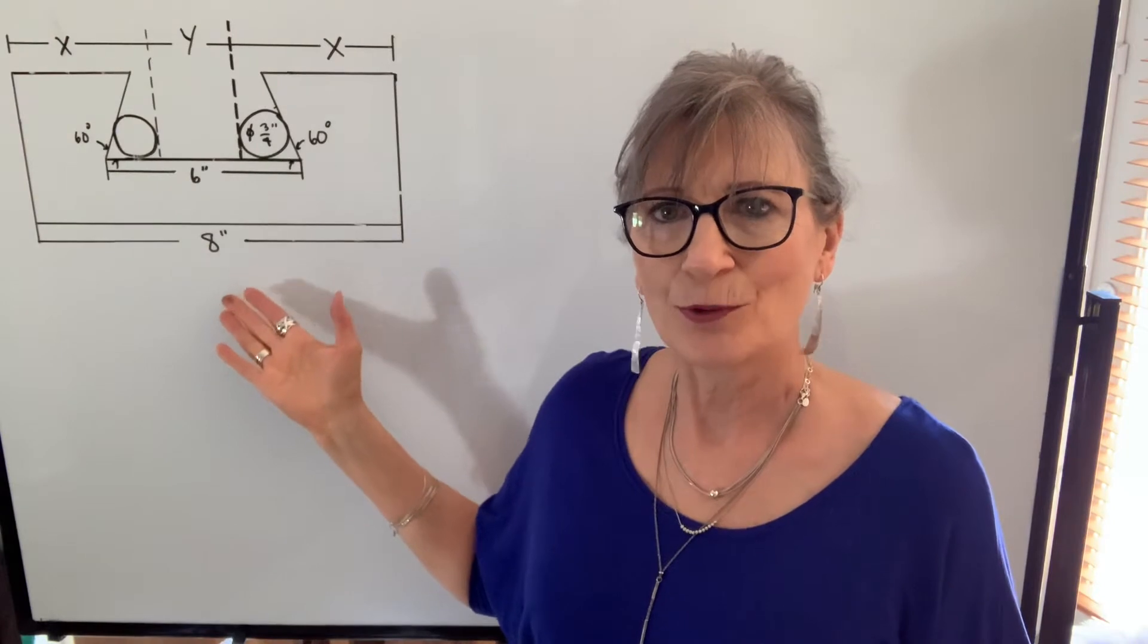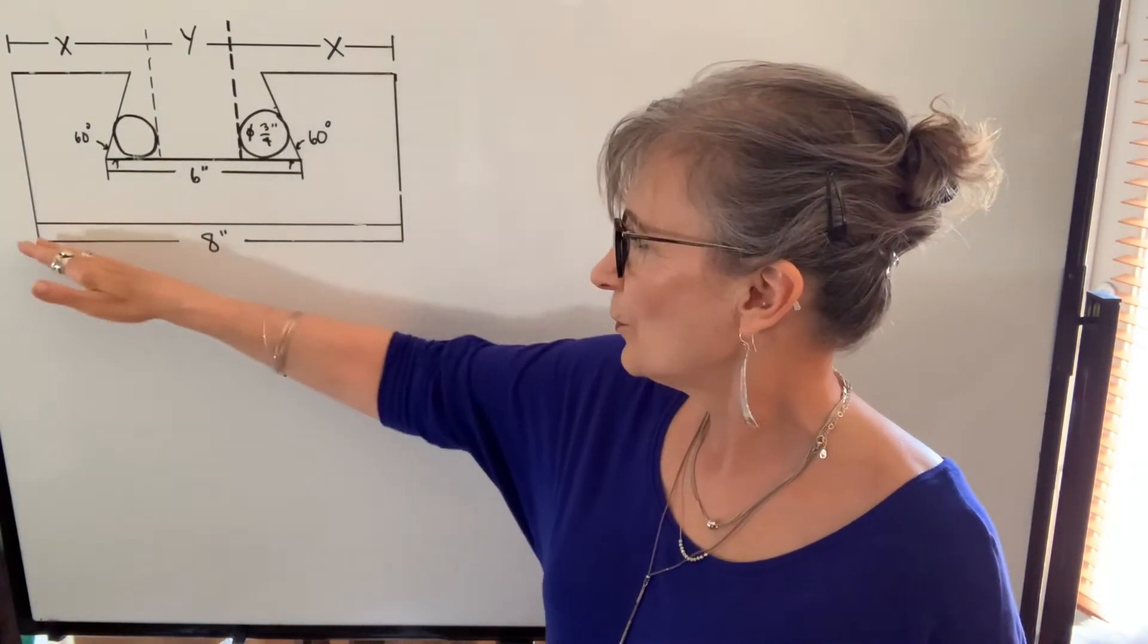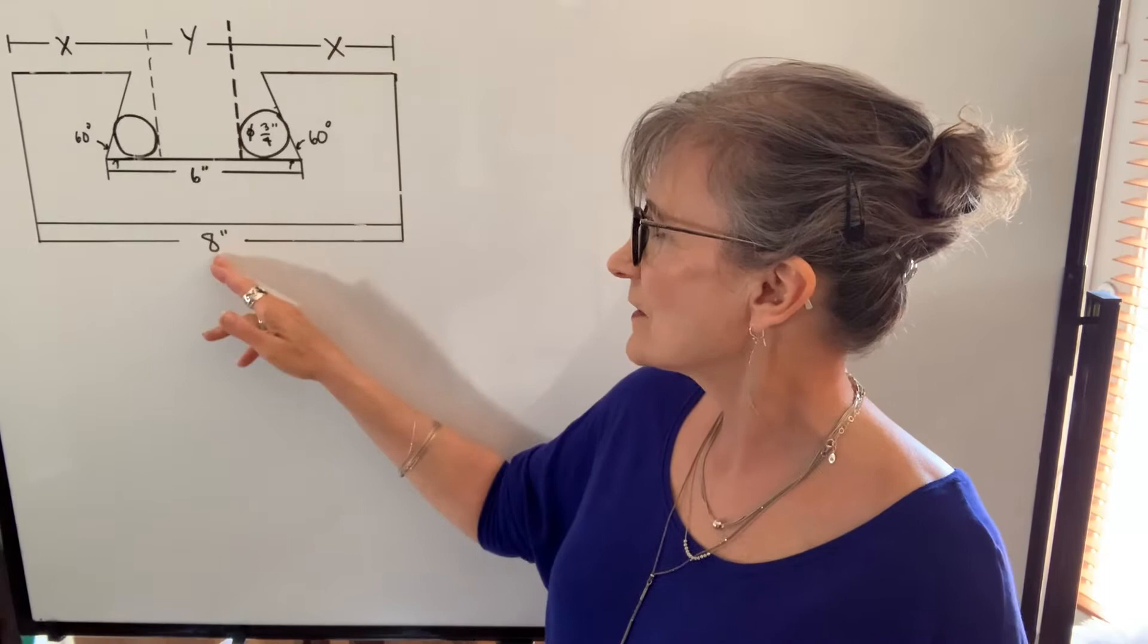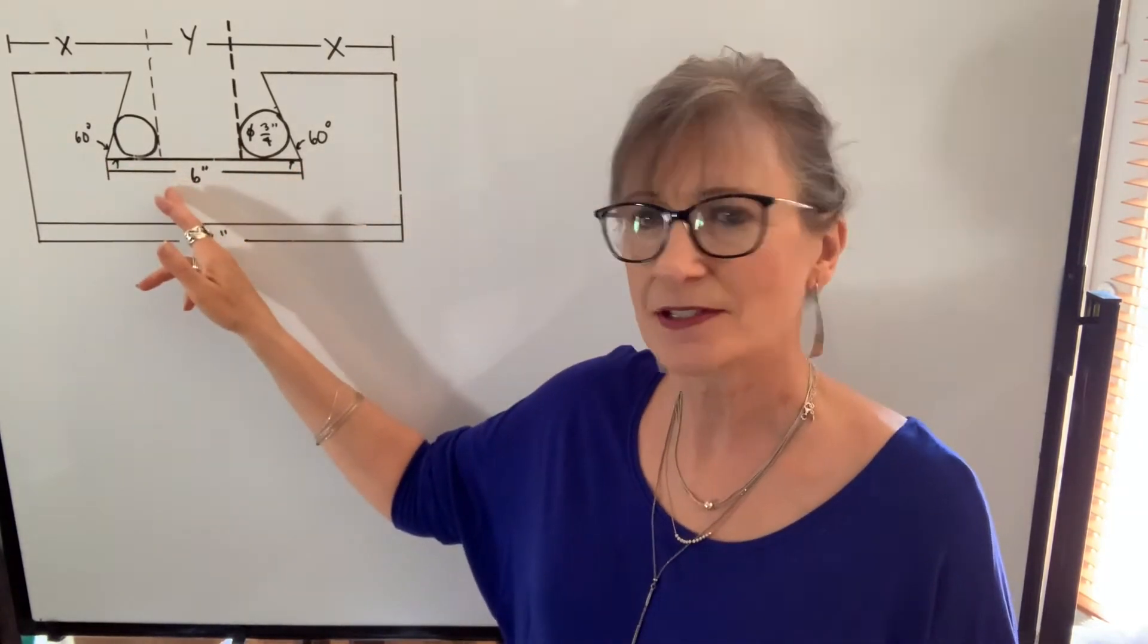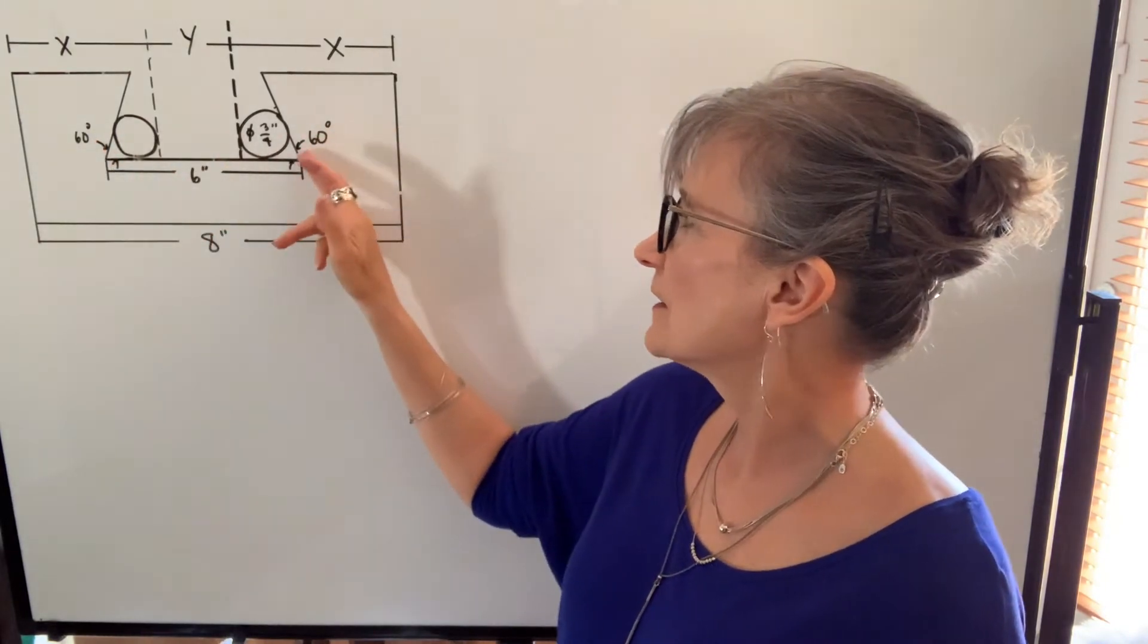In this example, which I apologize is not drawn to scale, we know the width of this block is 8 inches, according to the blueprint the distance here should be 6 inches, and we have a 60 degree dovetail.